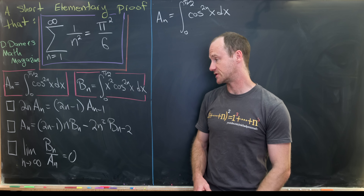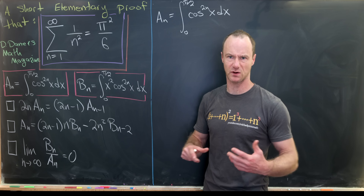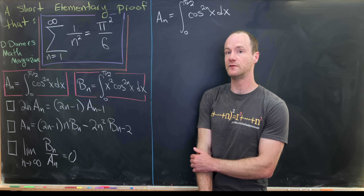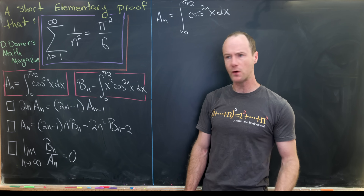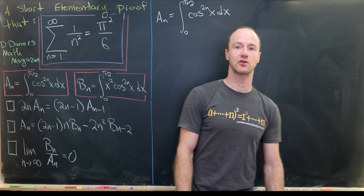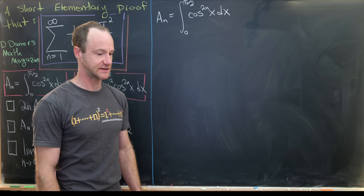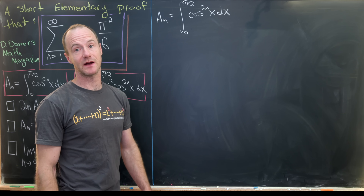The first result is a recursion on the sequence a_n. The second provides a relationship between the sequences a_n and b_n — a recursion involving both of them. The third tool is about the limit of the ratio of these sequences. So let's jump into this first tool. I've written a_n over here so that we can immediately get started, and we're going to approach this using integration by parts.